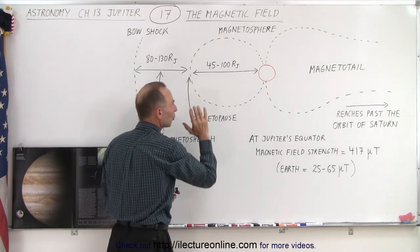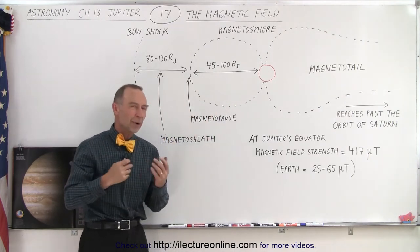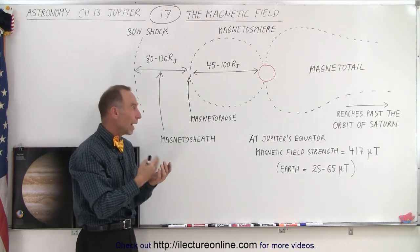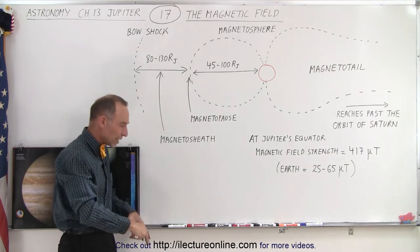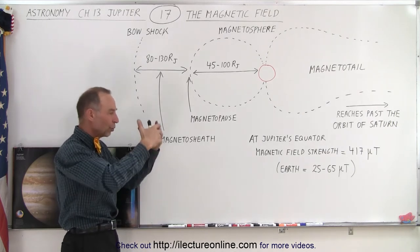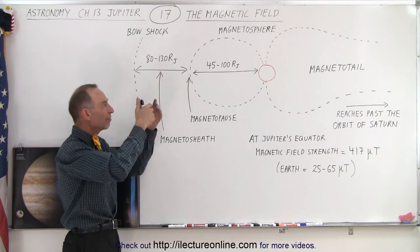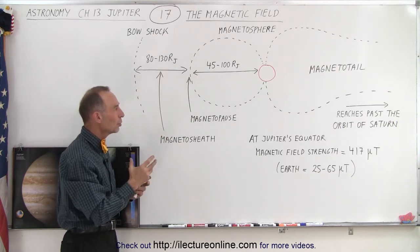Within the magnetosphere you will have a plasma of particles that come from the moon Io. Io is a very active volcanic moon, and therefore the volcanic eruptions, which go hundreds of miles away from the surface of the moon...